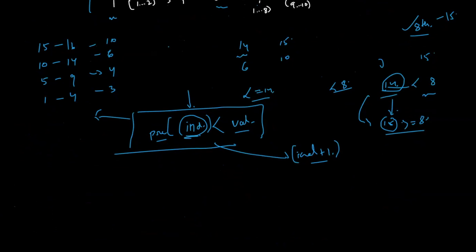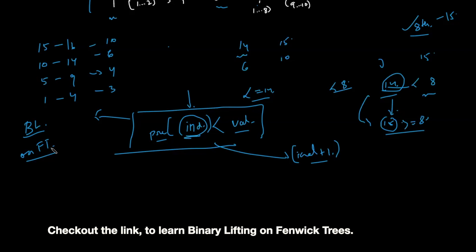Searching of the highest index that is less than val can be done using binary lifting on Fenwick Tree, for which I have already a tutorial. You can find the link in the description.